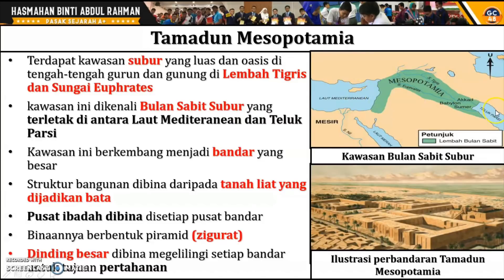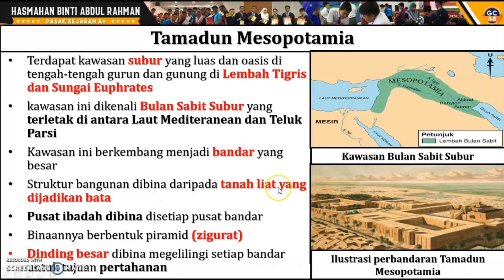Kawasan yang tadinya hanya pertempatan kekal akhirnya berkembang menjadi bandar yang besar. Dari segi pembinaan, mereka mula menggunakan tanah liat untuk membina bangunan, di mana tanah liat itu dijadikan bata. Kalau kita tengok ilustrasi perbandaran Tamadun Mesopotamia, kita dapat lihat rekabentuknya yang cantik dan kemas, kerana tanah liat telah dijadikan bata sehingga kelihatan tersusun.